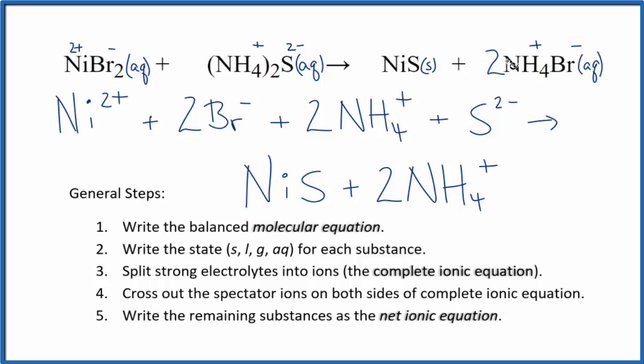And we have two bromide ions, also like the reactants. So this is our complete ionic equation. Now we get to cross out these spectator ions that are on both sides of the complete ion. They haven't changed, so we're not really interested in them.